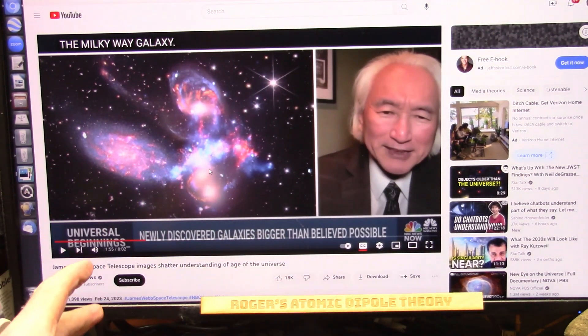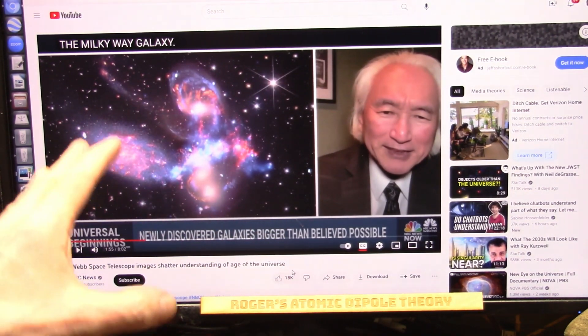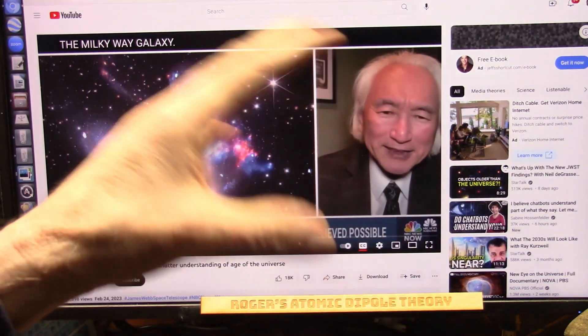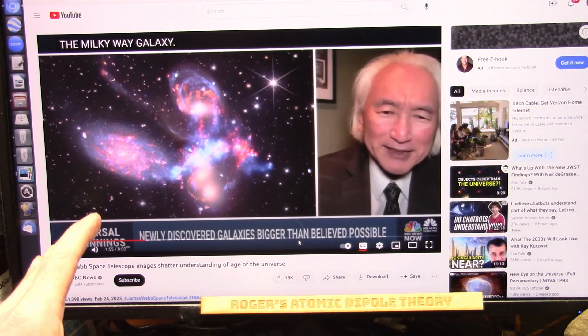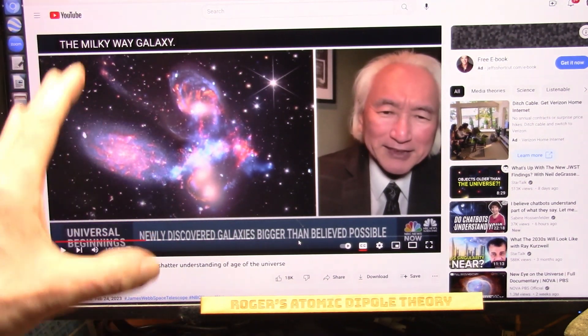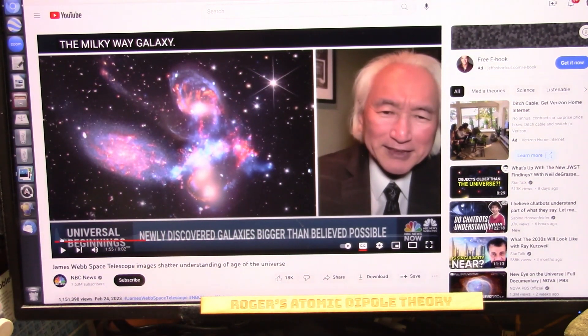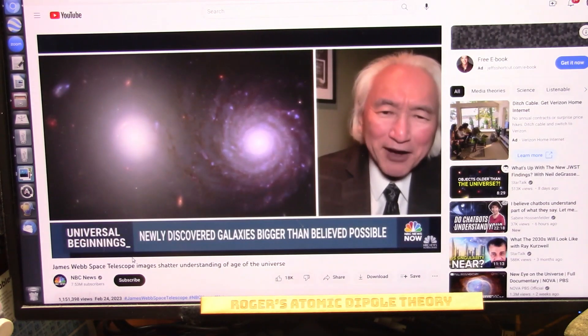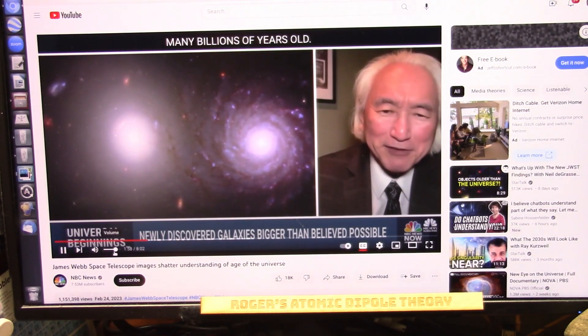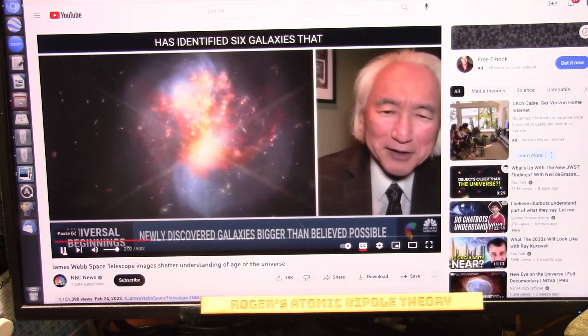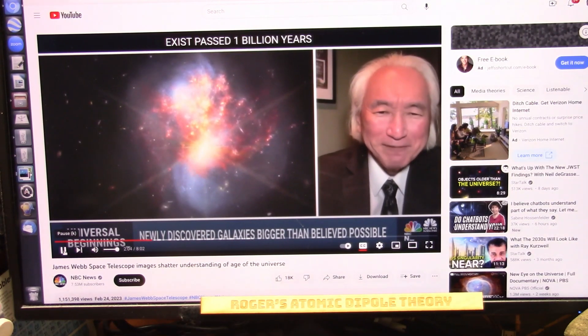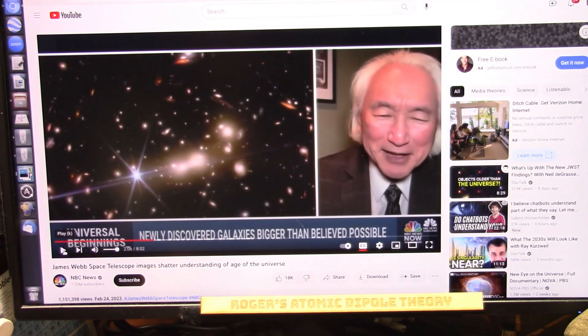They know everything's wrong. Listen to what they have to say. They're looking way out and they're finding all of these gigantic galaxies that should not exist this far away and be this big. So, here's what he's saying. Half a billion years after the Big Bang, they're up to ten times bigger than the Milky Way galaxy. That shouldn't happen. And they know these things.